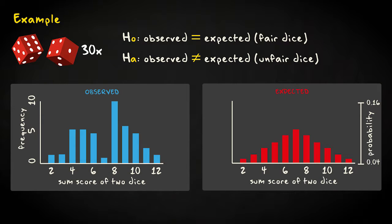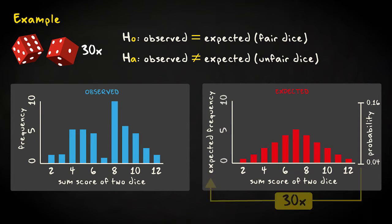And here is the theoretical probability distribution for the sum of two fair dice. If we multiply each value with 30, since we are considering the case where we have thrown 30 times, these are the expected frequencies for the two fair dice.